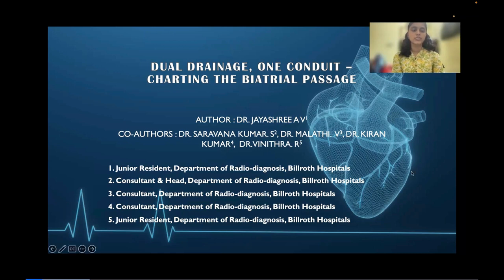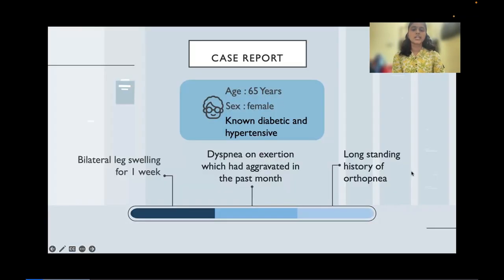Moving on to the case report, a 65-year-old female who was non-diabetic and hypertensive presented with complaints of bilateral leg swelling for one week. She also had dyspnea on exertion which had aggravated over the past one month, and she had a long-standing issue of orthopnea too.